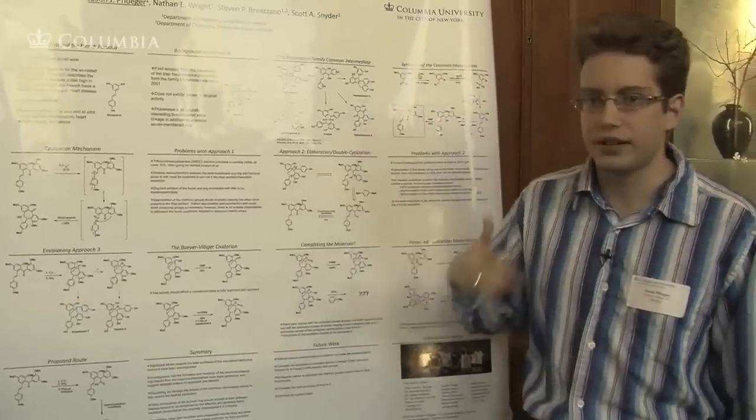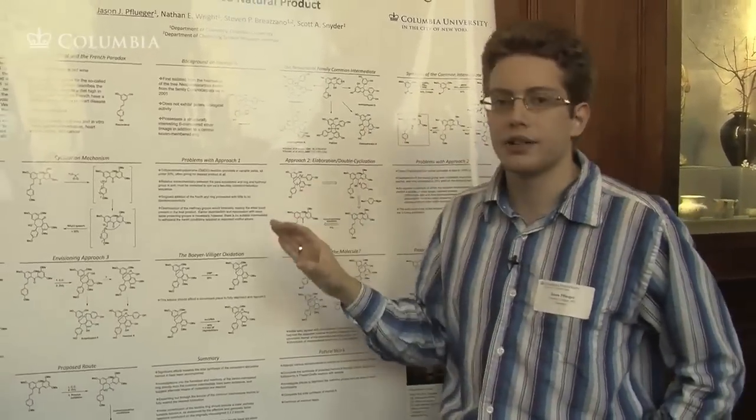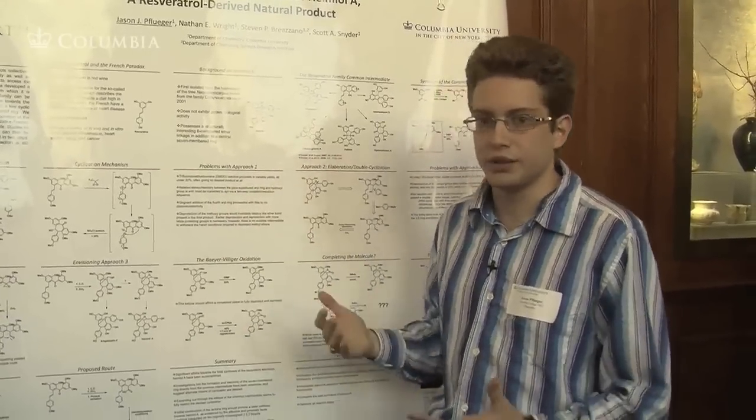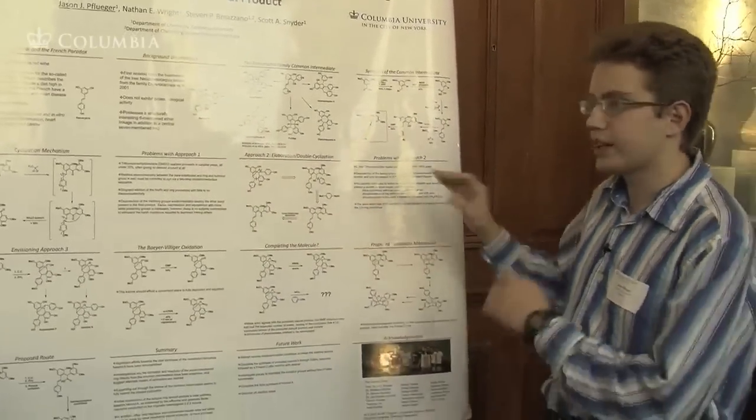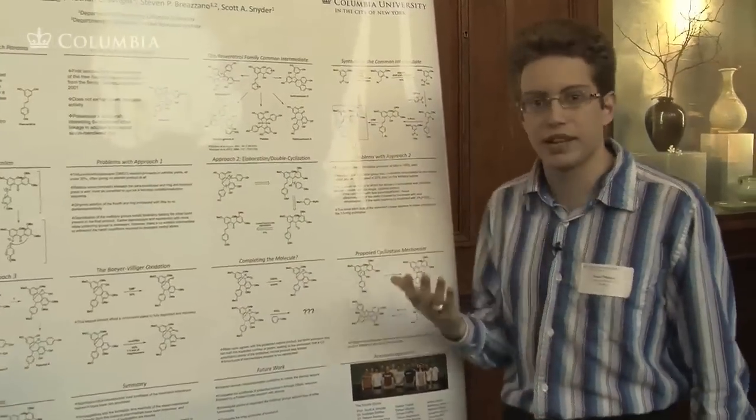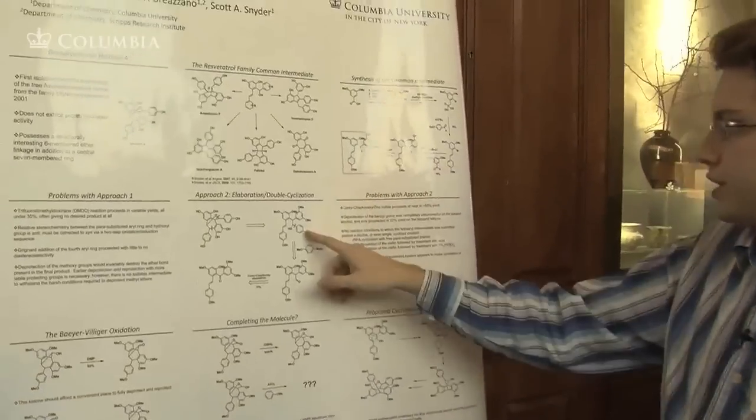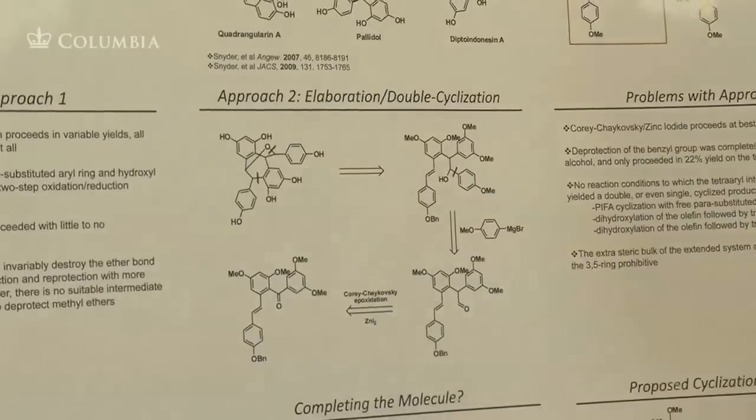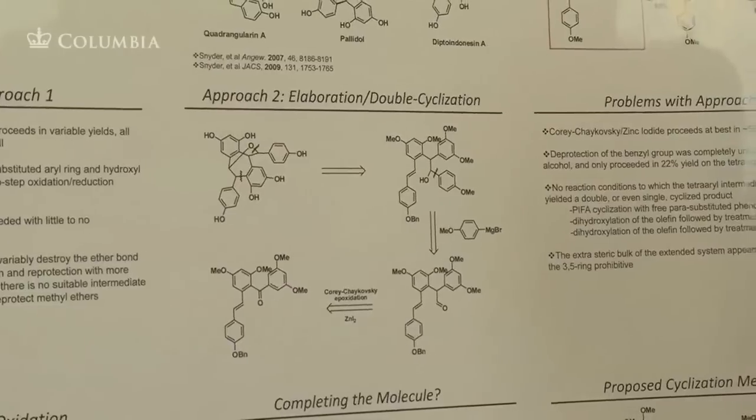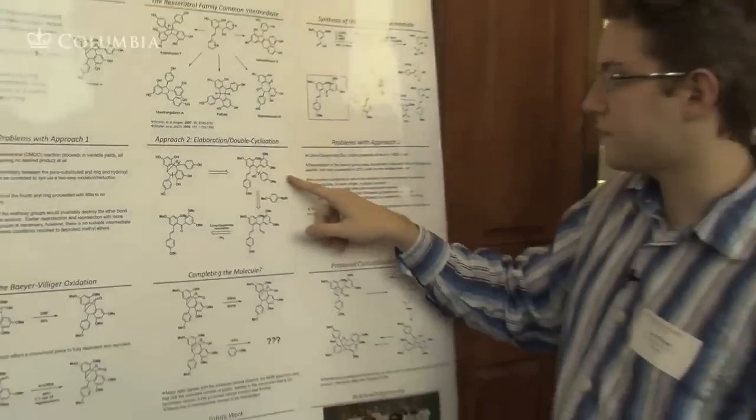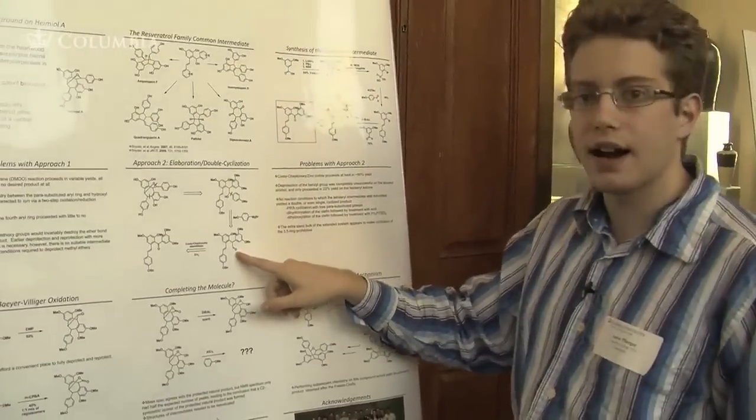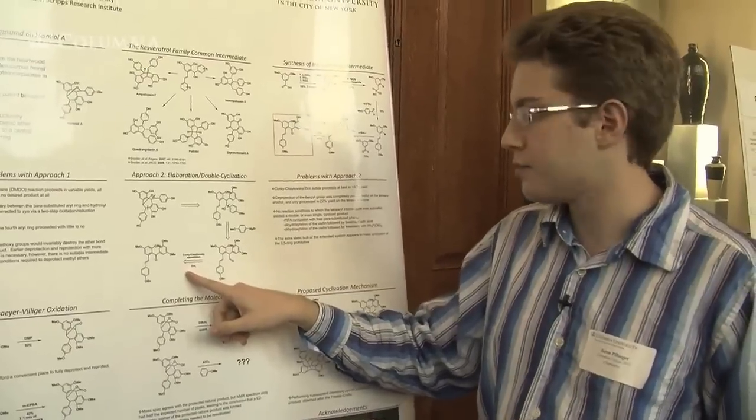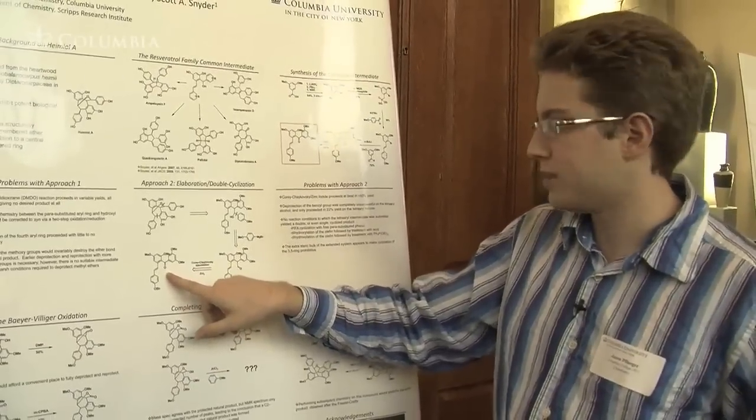Ultimately, those and several other difficulties led us to look for other routes towards the natural product as this route got very cumbersome and very low yielding very quickly. Our second approach involved a fairly ambitious double cyclization attempt where we would accomplish making this ether and this seven-membered ring at the same time in the same reaction flask. That compound could be prepared from Grignard addition into this aldehyde, which in turn could be made from a Corey-Chaykovsky epoxidation zinc iodide opening of our starting intermediate ketone.